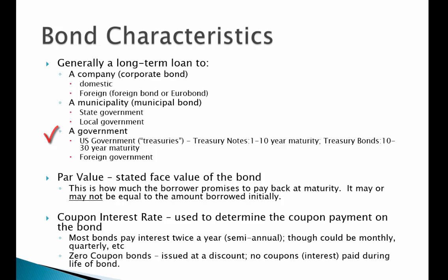Treasury notes are loans to the U.S. government that have 1 to 10 years of maturity. Treasury bonds have a longer time to maturity — 10 to 30 years. Foreign governments also borrow money, so the Japanese government, the Greek government, the German government all issue bonds, and investors can buy those as well.